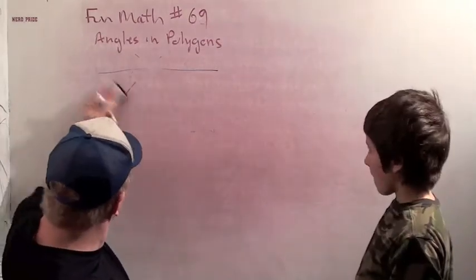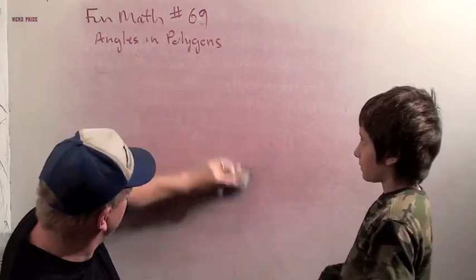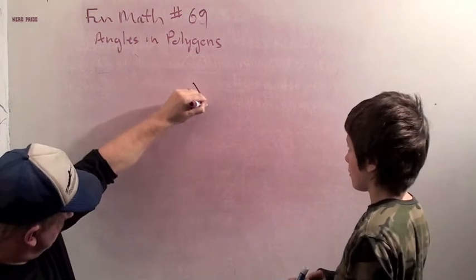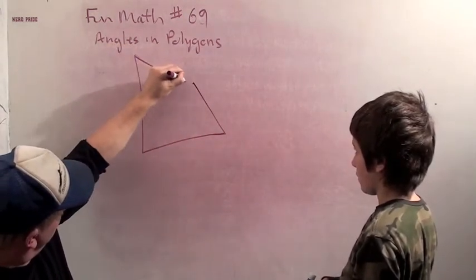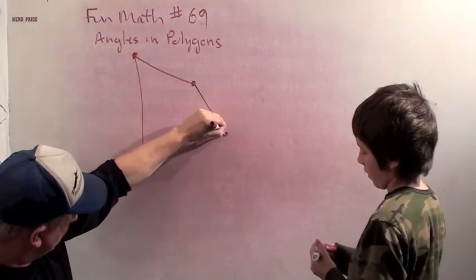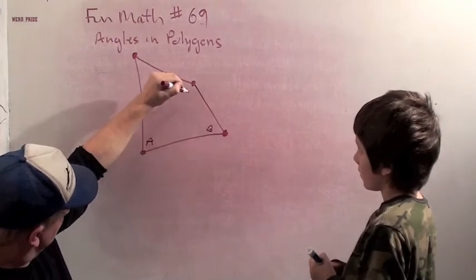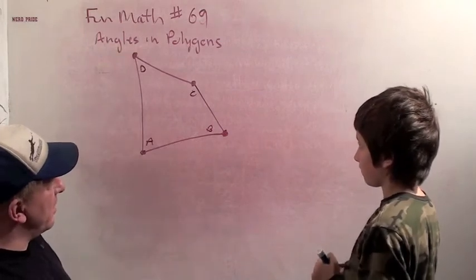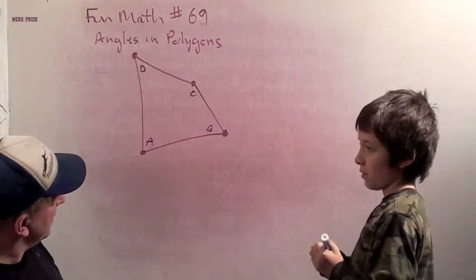So now we're going to talk about angles in other kinds of figures, starting with a quadrilateral. So now I have a quadrilateral, which means I have how many sides? Four sides. So I'm going to have four angles. We're going to try to figure out what you do to count the angles here.